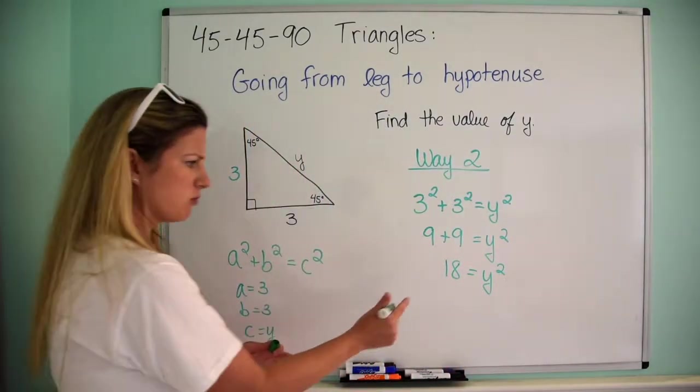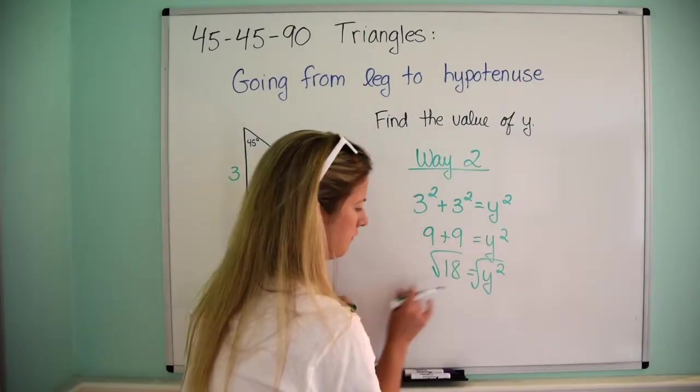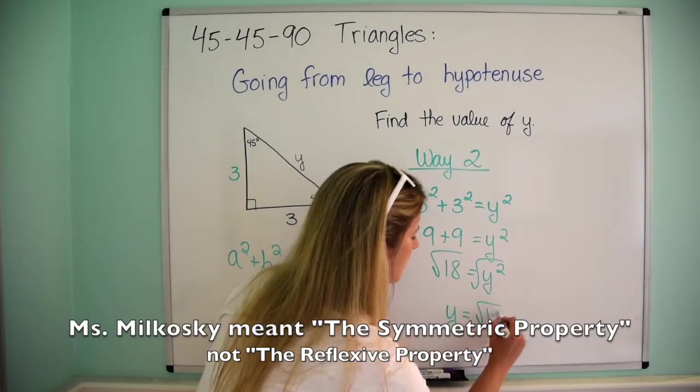So 3 squared plus 3 squared equals y squared. This is going to be 9 plus 9 equals y squared, and 9 plus 9 is 18 equals y squared. And then I have to solve for y, so I'm going to take the square root of both sides, so y equals the square root of 18.